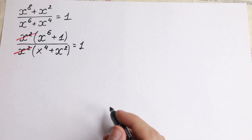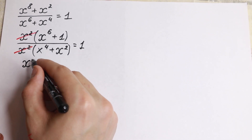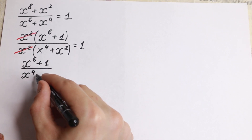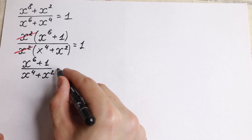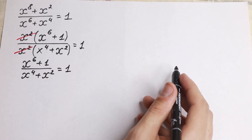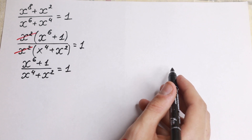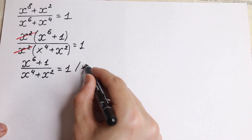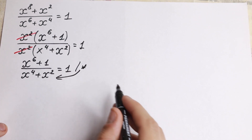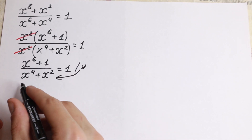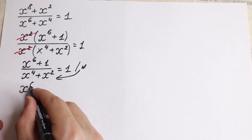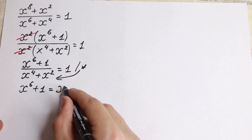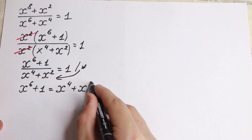So as a result, what will we have? We will have x⁶ plus one over x⁴ plus x² equal to one. So after this cancellation we will have this expression. Now multiplying both sides by our denominator, we will get the equation x⁶ plus one equal to x⁴ plus x².